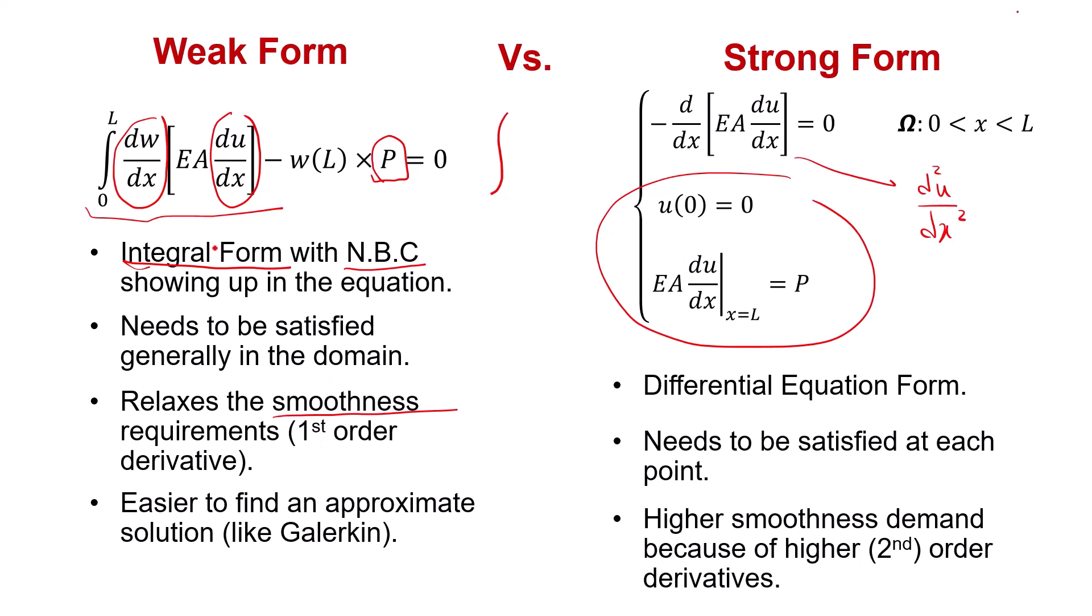It's called weak because it relaxes the requirements for higher order derivatives. Because of that, and because of its integral structure, the weak form is much more suitable for approximate methods, like Galerkin's method and finite element method.